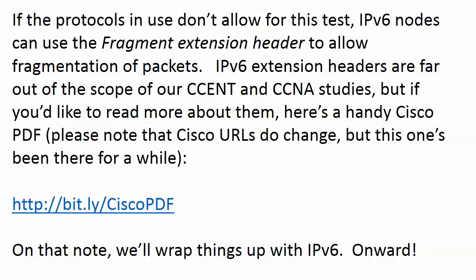If the protocols in use do not allow for PMTUD, version 6 nodes can use an extension header called the fragment extension header to allow fragmentation of packets. Version 6 extension headers are out of scope for our study, but there's a Cisco PDF linked here for further reading. If you're watching on Udemy or GNS3 Academy, it'll be attached to this video. It's not required reading, but it has good content for your version 4 to version 6 header comparison.